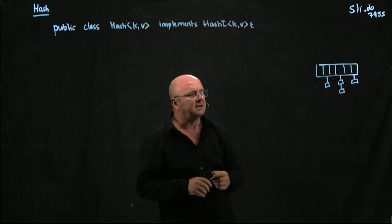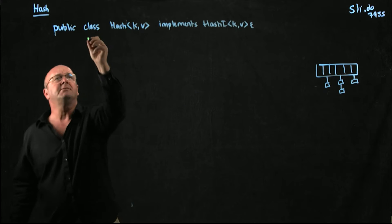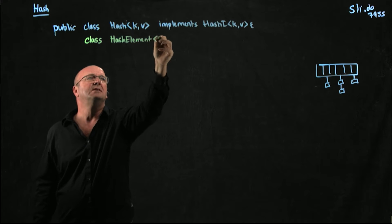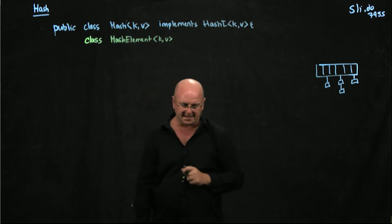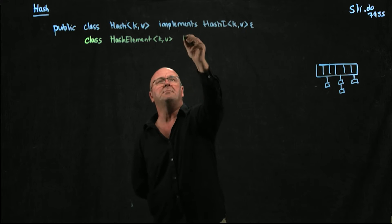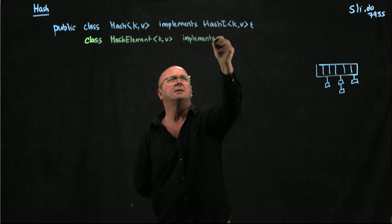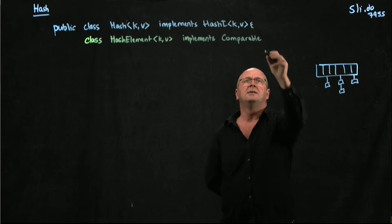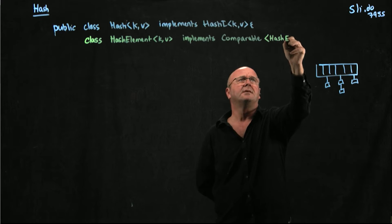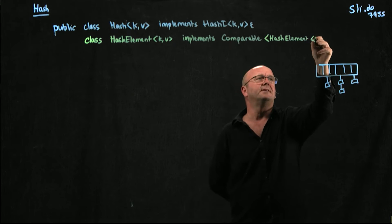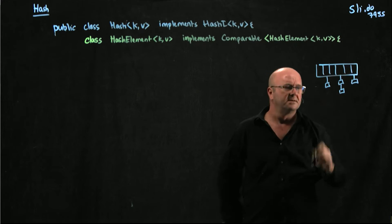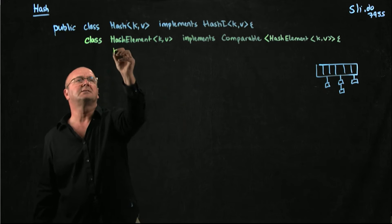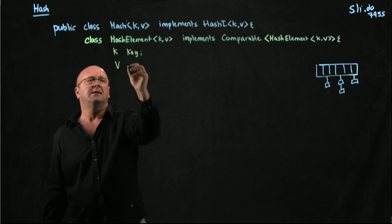What we can do in our hash is make a little inner class like we've seen before. So I'm going to call my class HashElement because it's something that's going to go in the hash and it's going to be a generic and it's going to accept keys and values. And I'm going to implement, because I'm going to put it in my linked list, it's going to implement Comparable. And the only thing it knows how to compare are HashElement K V.